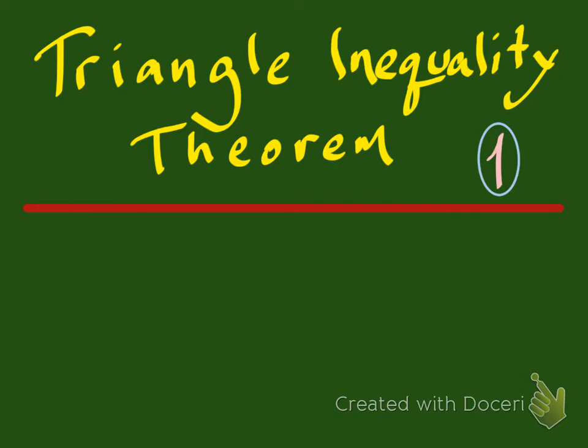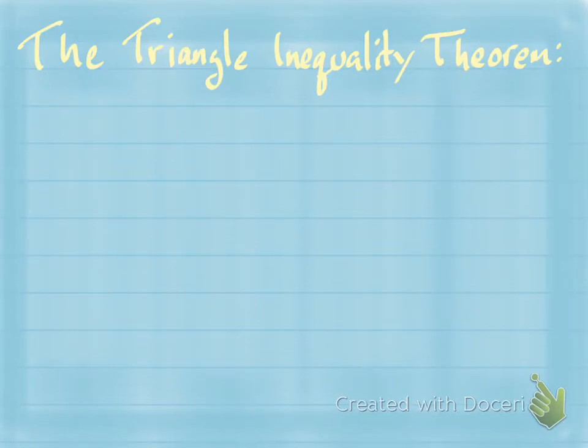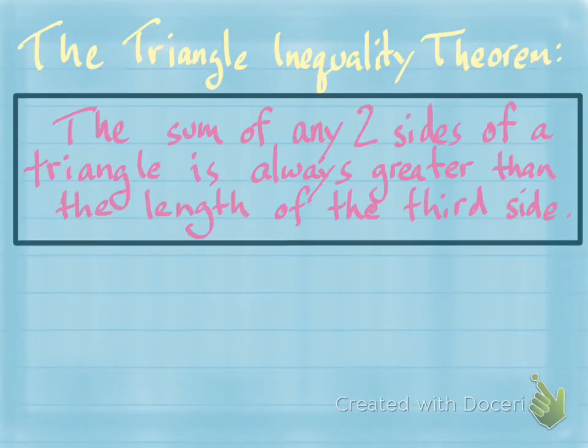Hey, everybody. Thanks for checking into another math video. This one is about the triangle inequality theorem — actually the first of two videos. The second one is going to be about what I'm calling the opposite side, opposite angle principle, so please make sure you watch that video as well. The triangle inequality theorem says that the sum of any two sides of a triangle is always greater than the length of the third side.